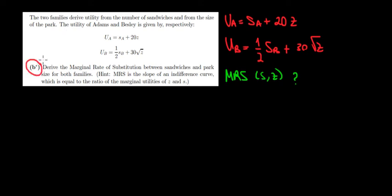Let's have a look at part B now. The two families derive utility from the sandwiches that they consume and from the size of the park. We have the utility for every family, for the Adams and for the Bessley over here.